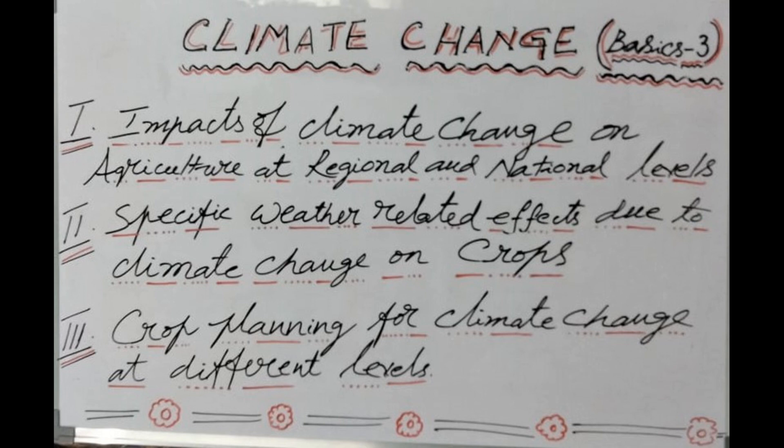Regarding water availability, C4 crops require less water per gram of carbon assimilated than C3 crops. For example, crops like sorghum and maize are C4 crops and should be more tolerant of water stress than other cereal crops. Under climate change scenarios, C4 crops require less water per gram of CO2 assimilation than C3 crops.